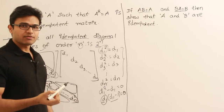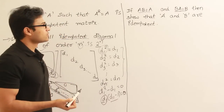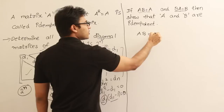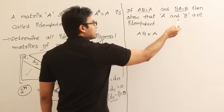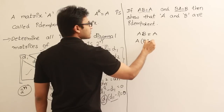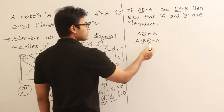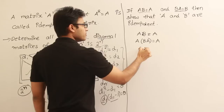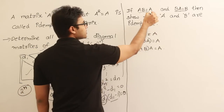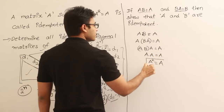We know that AB equals A. From the second equation, in place of B we can write BA. Substituting, A times (BA) equals A, which we rewrite as (AB) times A equals A using associativity. Since AB equals A, this becomes A times A equals A, that is A squared equals A. Therefore, A is idempotent.